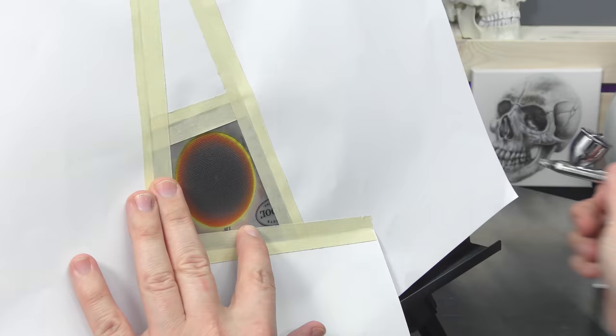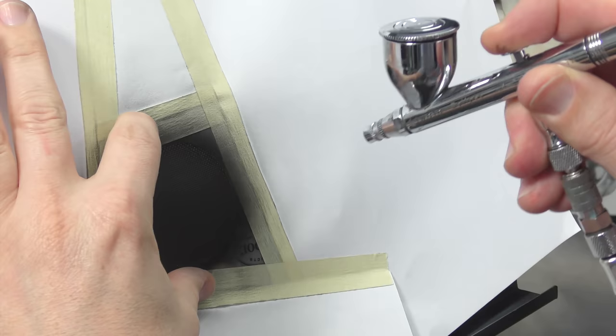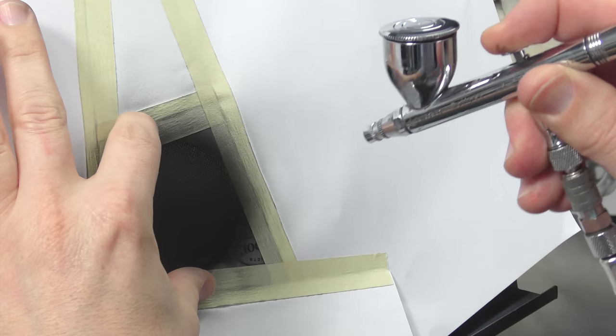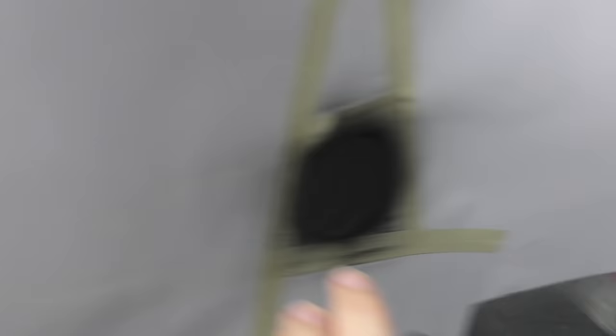And grabbing the stencil once again, line it up. Pretty happy with that. And then we're going to dust the black over the top. So this is going to opaque everything underneath. I mean, that looks cool as it is, but I want to make it look a bit better.